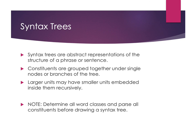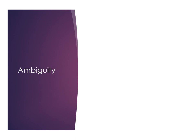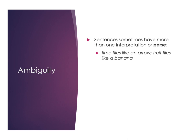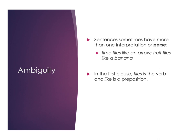The last topic is ambiguity — what happens when you can have more than one interpretation, more than one tree, or what we call a parse. For example: 'time flies like an arrow; fruit flies like a banana.' You see the same words 'flies' and 'like,' but they do something different in each. In 'time flies like an arrow,' 'flies' is a verb and 'like' is a preposition. In 'fruit flies like a banana,' 'flies' is a noun and 'like' is the verb. The same words have different word classes and different functions, which gives us different trees as a result.